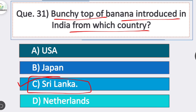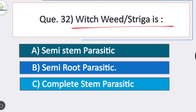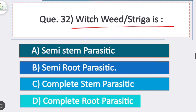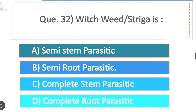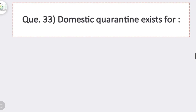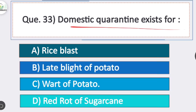Question 32: witch weed or Striga is? Option B is correct — semi-root parasitic. Question 33: domestic quarantine exists for? Option C is correct — wart of potato. Wart of potato is a disease confined to the Darjeeling hills.